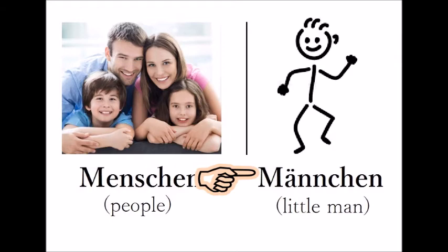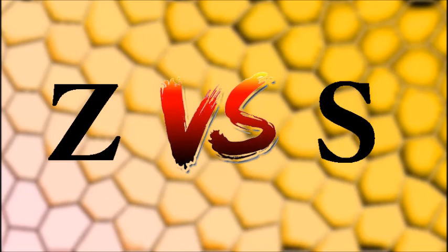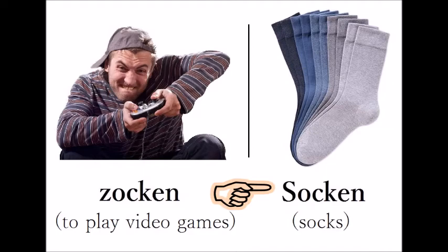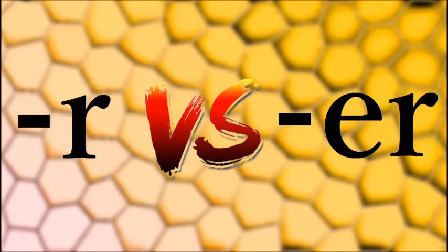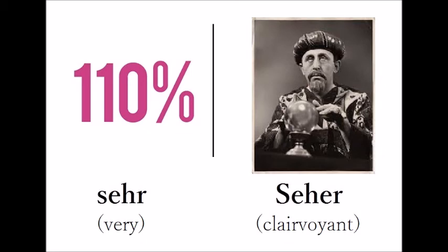Z versus S. Zocken — Socken. Zocken — Socken. Ziegen — Siegel. Ziegen — Siegel. Sehr.